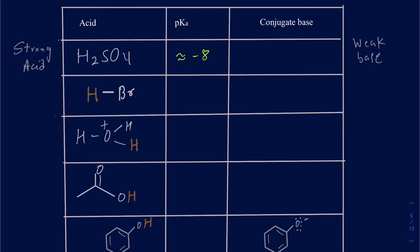The conjugate base of sulfuric acid is HSO4 1-. To find the conjugate base of any acid, just remove the proton and see how it looks. For HBr, the pKa is approximately negative 9 as well. After losing the proton, the conjugate base of HBr is just the bromide ion.